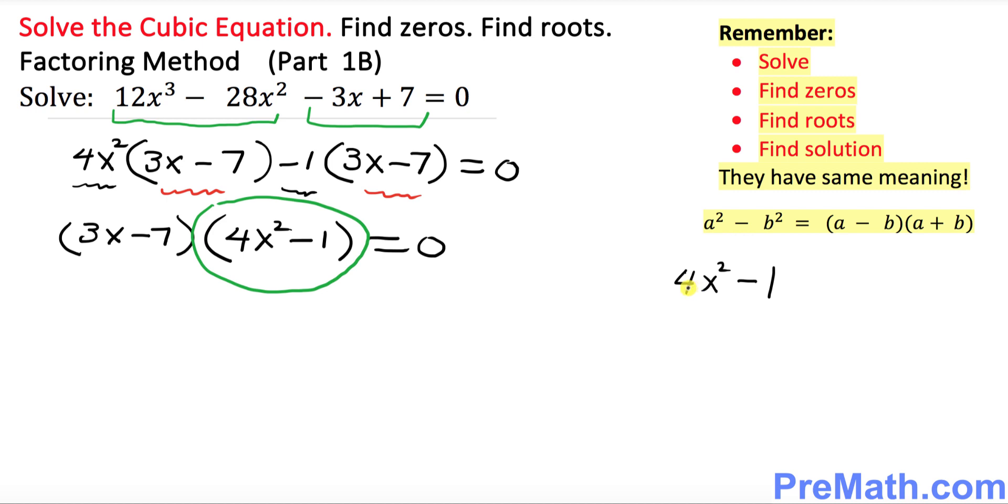Now, you can see 4x squared. 4 could be written as 2 squared. So this could be written as 2x and then power 2. And then 1 could be written as 1 squared. So you see this thing, we got a difference of 2 squares.